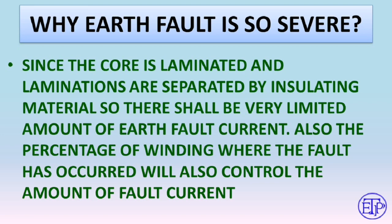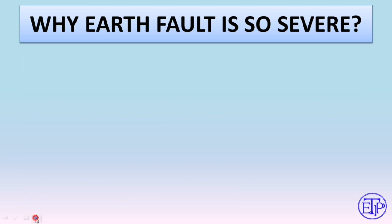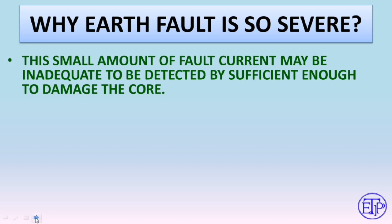This low earth fault current is dangerous because if insulation has failed and fault current passes through the core, the core carries current — but the core is not designed for carrying current, it is designed for carrying magnetic flux. So it can create hot spots and lose its magnetic property. This small amount of fault current may be inadequate to be detected but sufficient enough to damage the core. This is the major threat.